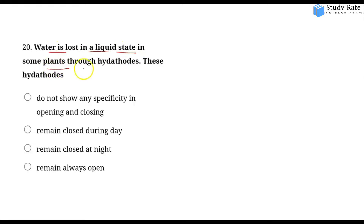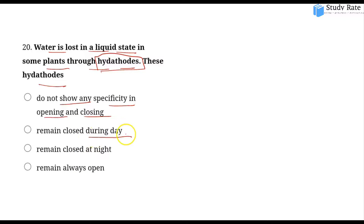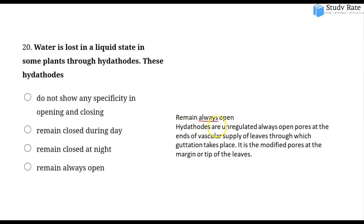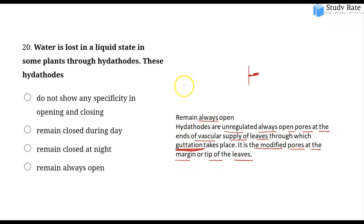Water is lost in liquid state in some plants — this is called guttation through hydathodes. Hydathodes are always open pores — unregulated, always-open pores at the end of vascular supply of leaves, where guttation takes place. They are modified pores at the margin or tip of leaves through which water in liquid form exits the plant.